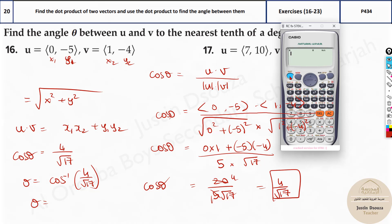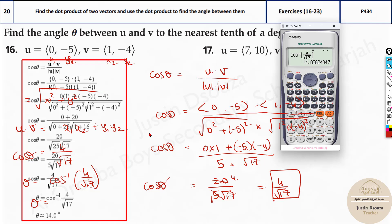To get cos inverse in the calculator, press shift and then cos. Cos and then 4 divided by square root 17. You should properly close the bracket. And now we get 14.03 degrees. It's about 14 degrees, I guess. Yeah, that's 14 degrees. So that's how we solve it up.